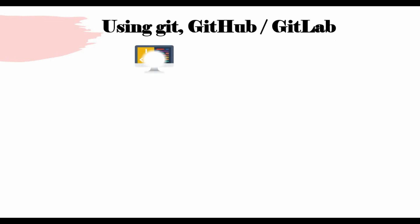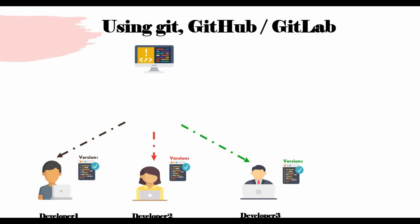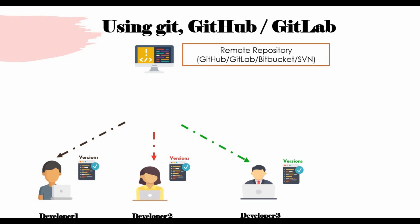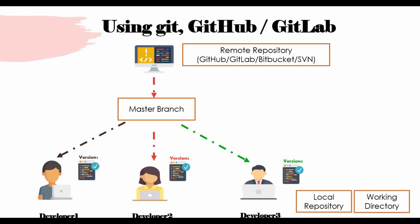We also discussed how Git, GitHub, and GitLab are related — how code is stored when developers are working and creating their own versions. There is a remote repository which can be GitHub, GitLab, Bitbucket, or SVN. There can be a master branch from which versions can be pulled or pushed. On the local user machine you have a local repository and working directory, where data is edited and committed to the local repository, then pushed into the master branch. We also discussed feature branches from the master branch used by developers.